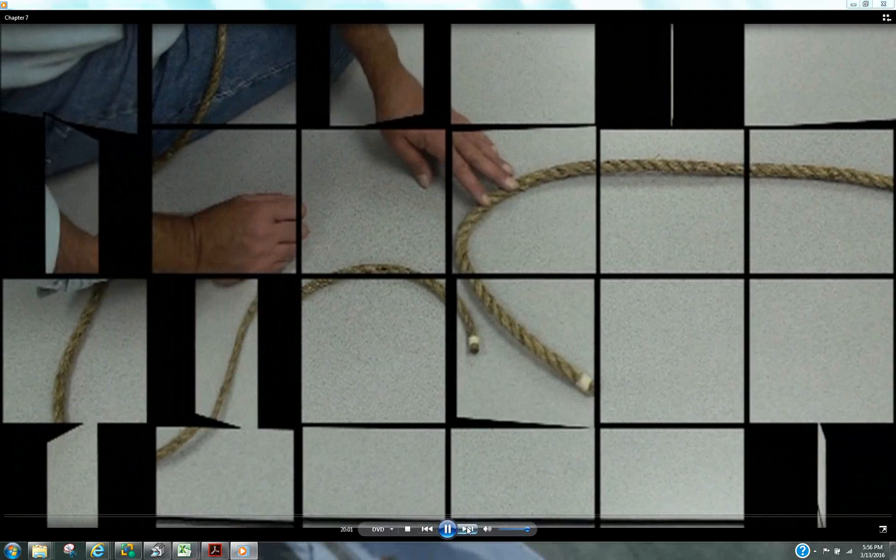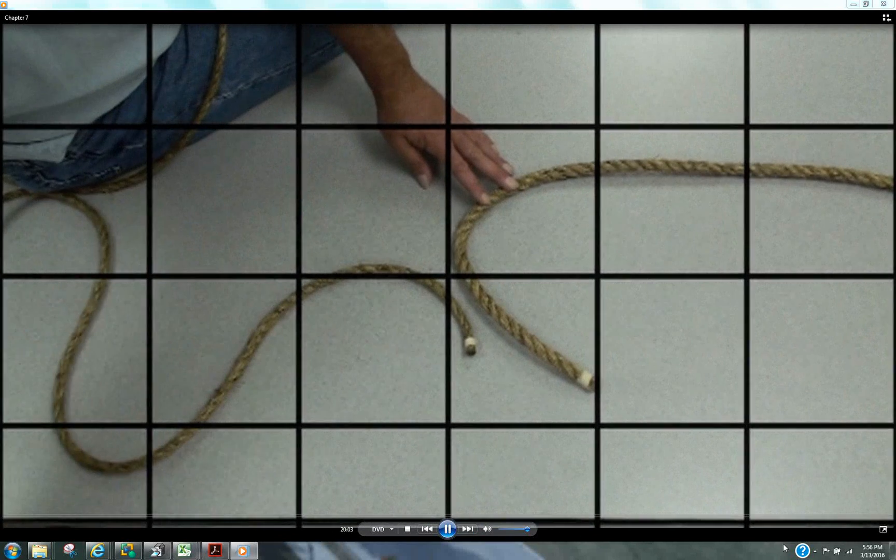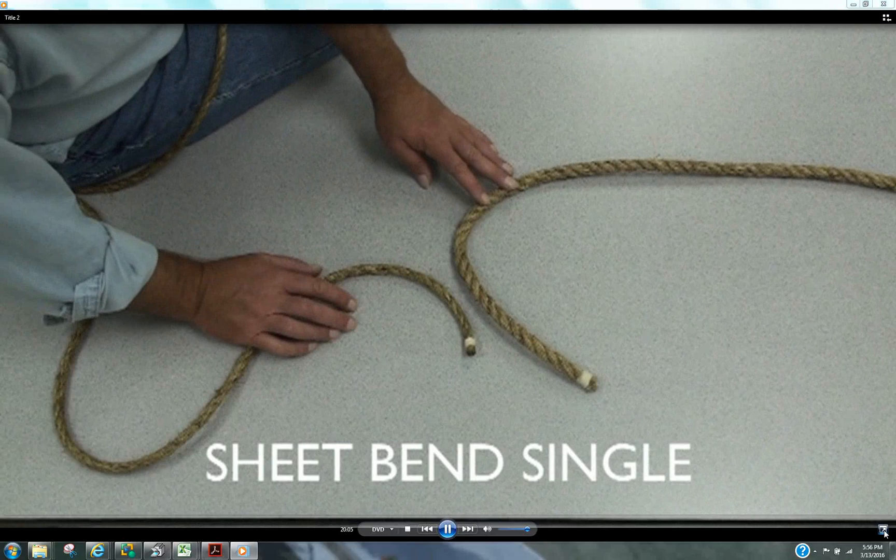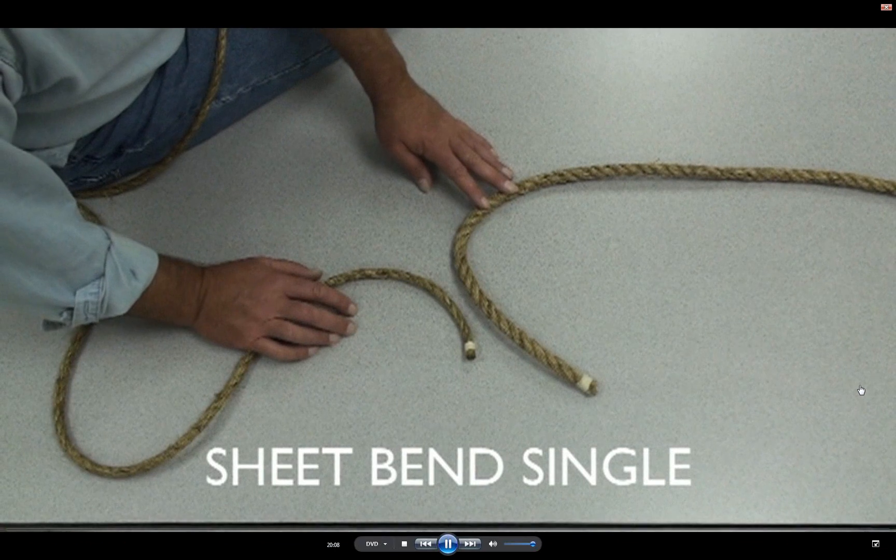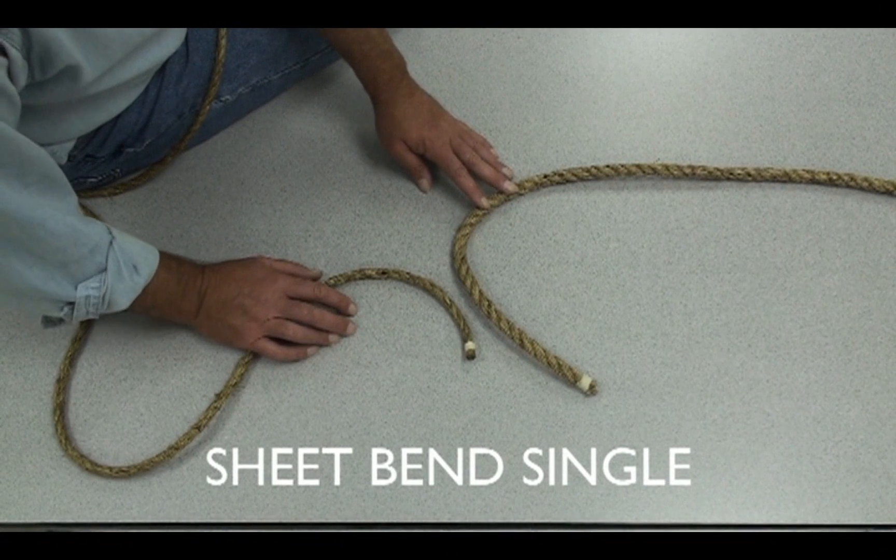Now we're going to tie a sheet bend. This knot is used for two ropes of different diameters. Don't tie a square knot for ropes of different diameters.